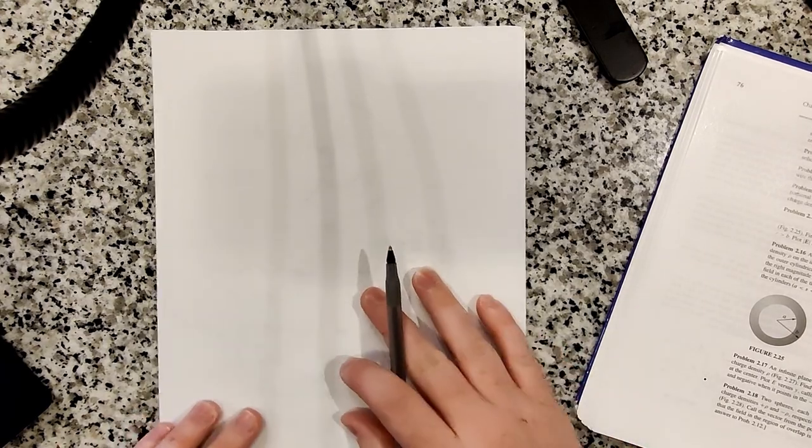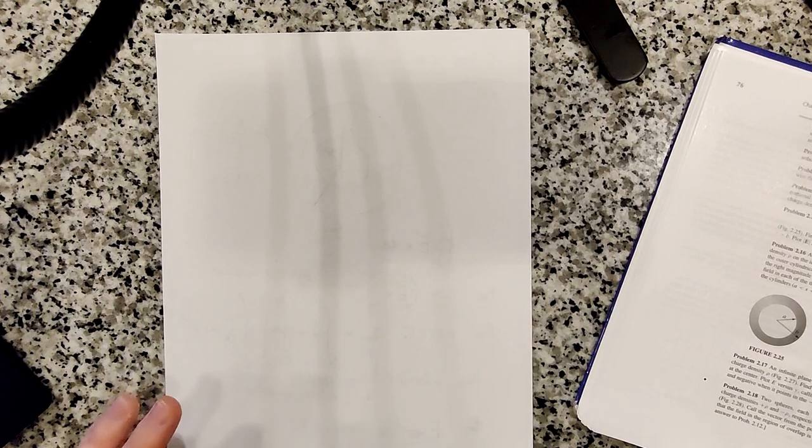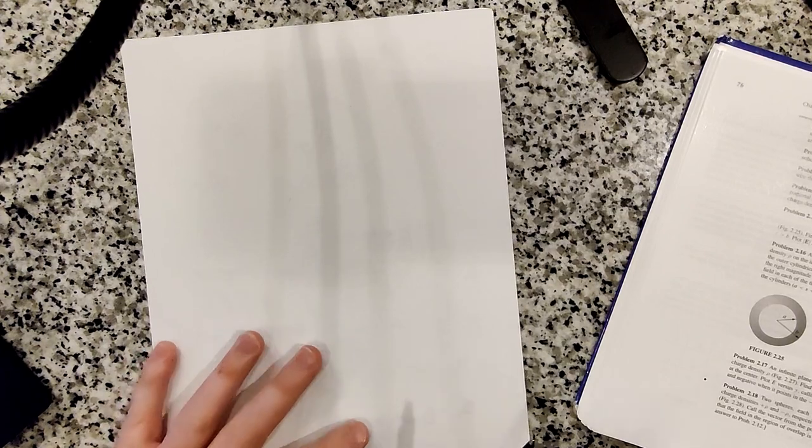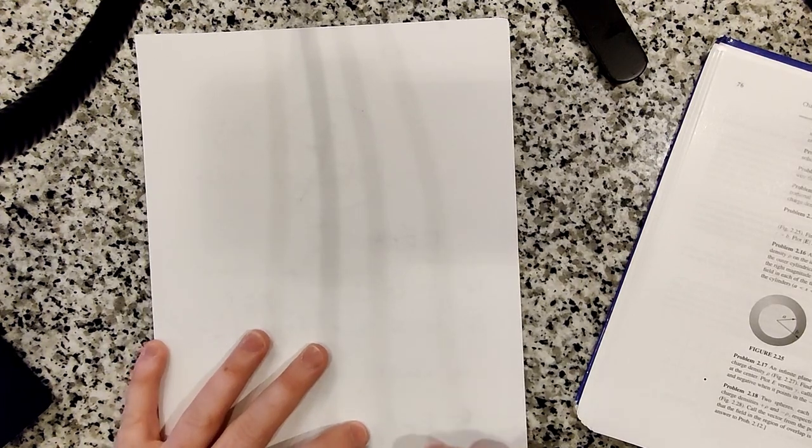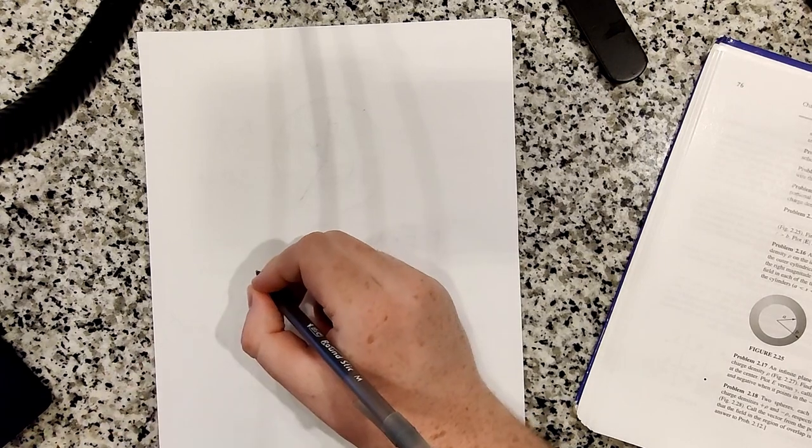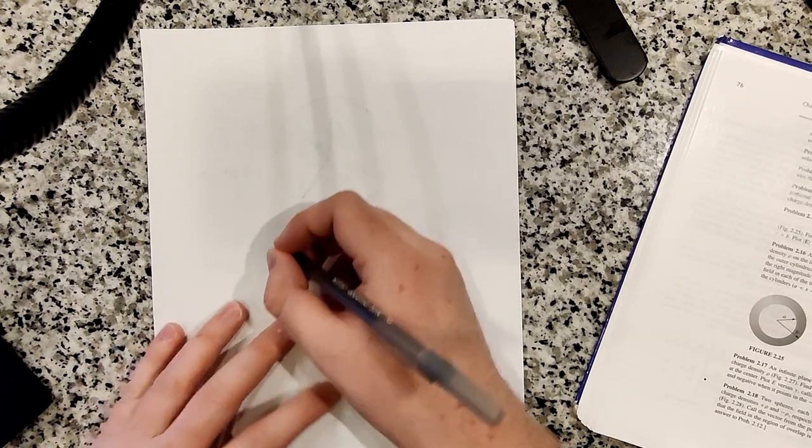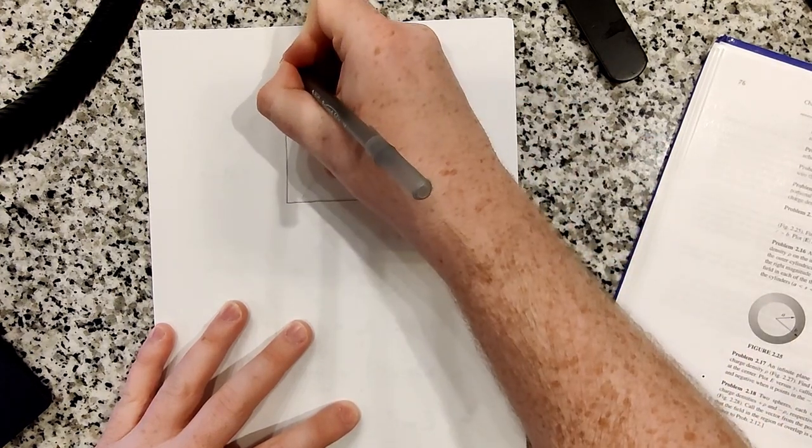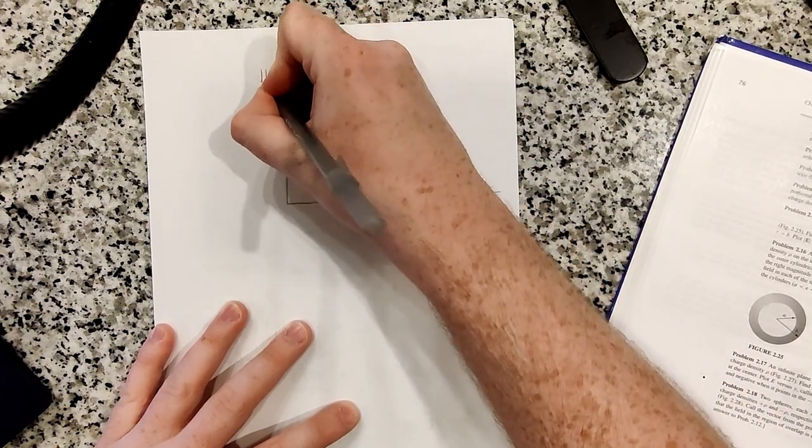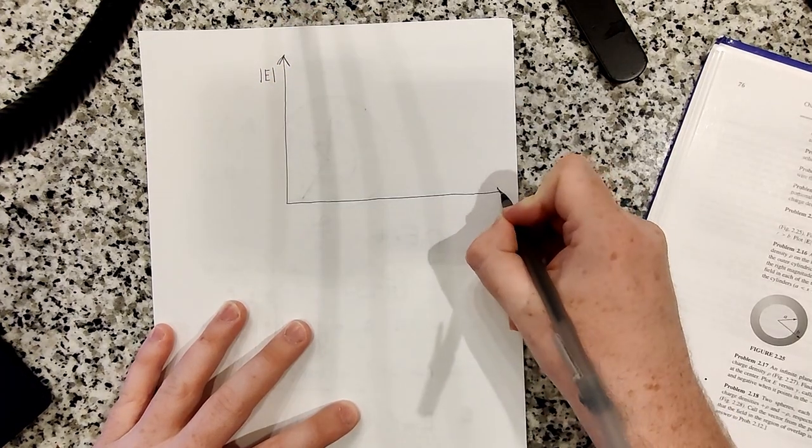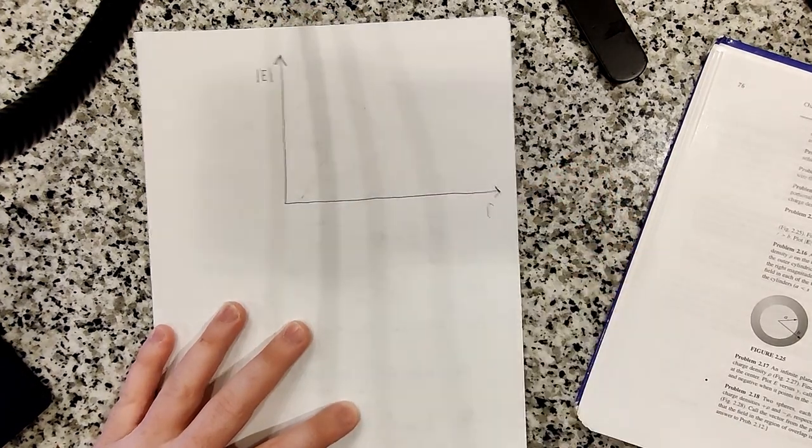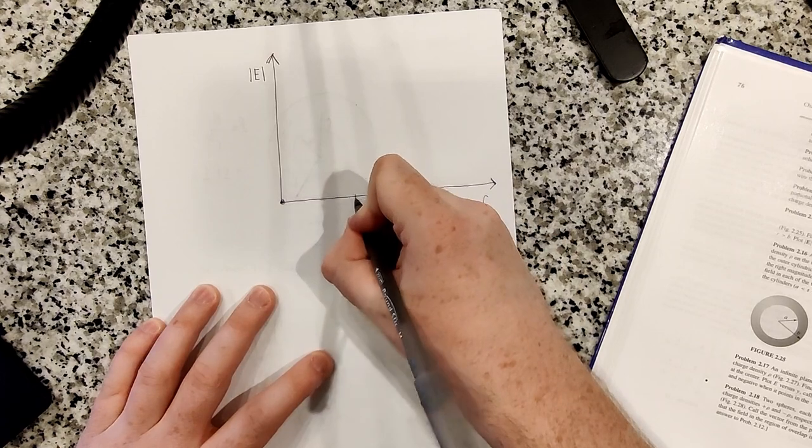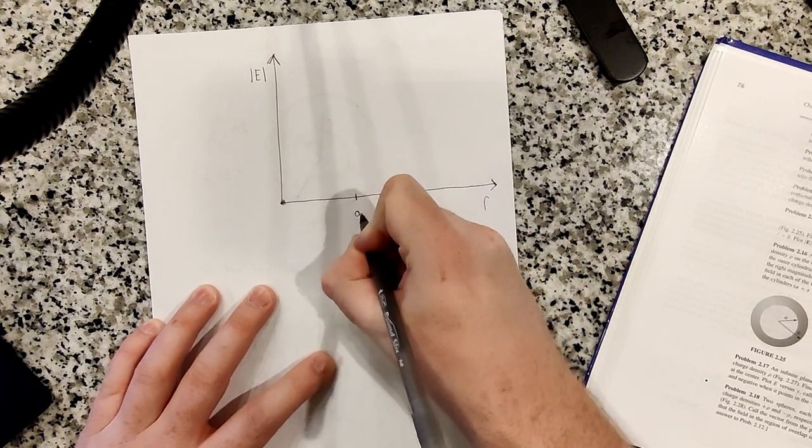And quickly, to finish up problem 2.15, the book asks us to plot the magnitude of the electric field as a function of r, in the case that b is equal to 2 times a. So just real quick, I'm going to draw just a plot here. So this axis represents the magnitude of the electric field, and this axis is the radius. So this is the origin. So essentially, let's mark a place for a.